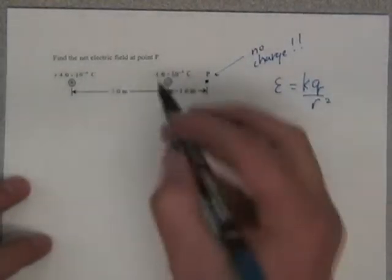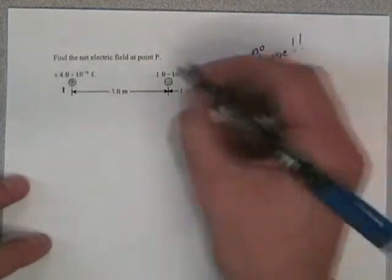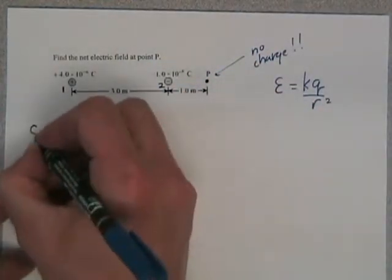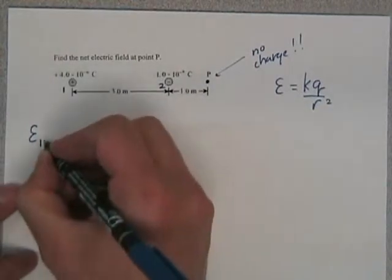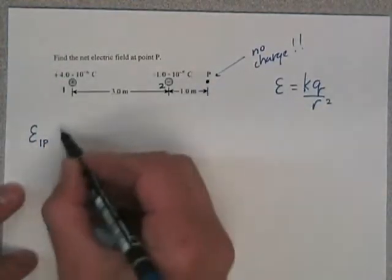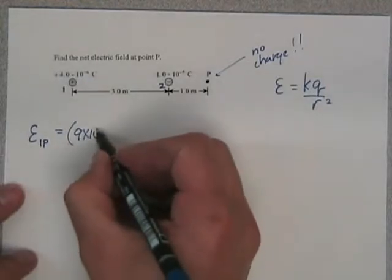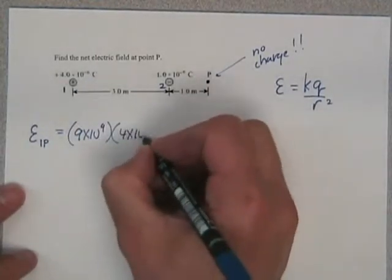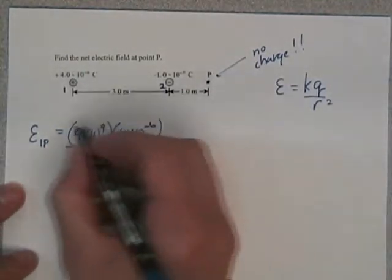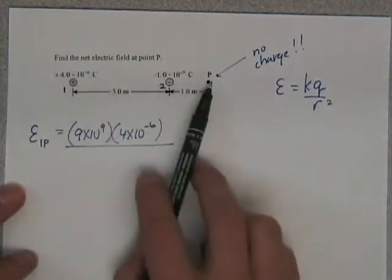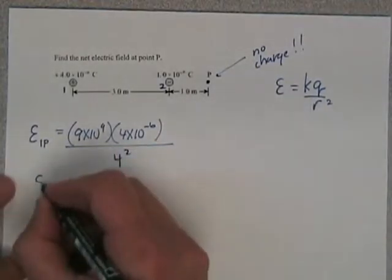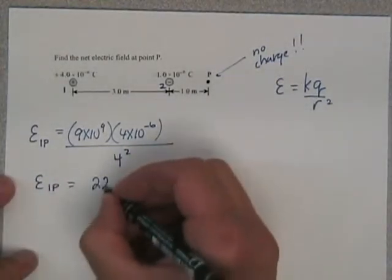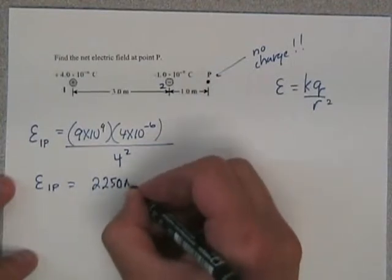I'm going to call this charge 1, I'm going to call this charge 2. So for my electric field that's being created by 1 on P, so 1P, is going to be 9 times 10 to the 9. The value of that charge is 4 times 10 to the minus 6, and it's over a distance of 3 meters plus 1 meter, which is going to be 4 squared. So plugging that all in, you're going to get 2,250 newtons per coulomb.